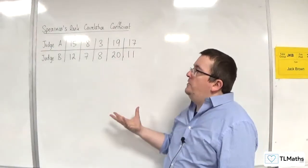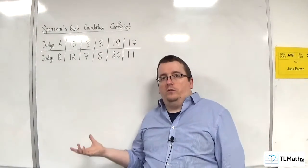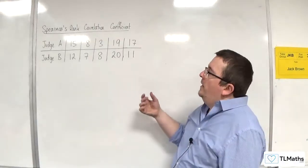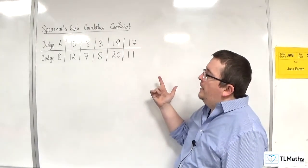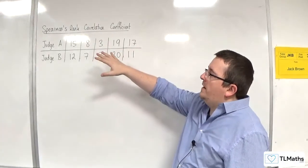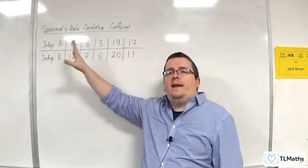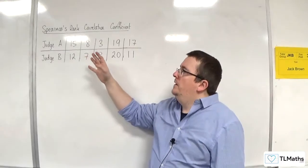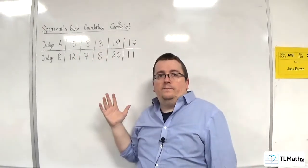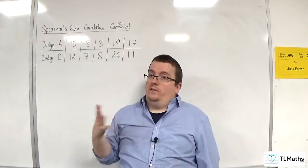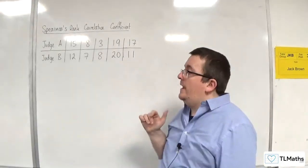It could also deal with non-numerical data. So if this data, instead of ranking them out of 20, they gave them a grade, so A, B, C, D, E, for example, then we could work with that, where PMCC can't deal with that, but Spearman's rank can.